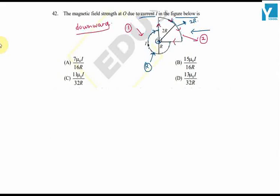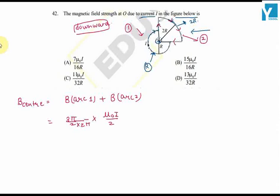And the magnetic field will add up due to both arcs. So B at center is equal to magnetic field due to arc 1 plus magnetic field due to arc 2. So this is equal to 3π/2 upon 2π into μ₀I by 2R.